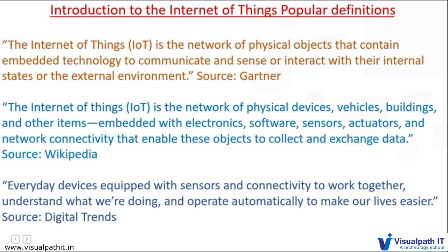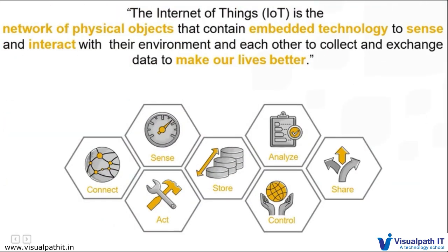Digital Trends defines IoT in terms of everyday devices equipped with sensors and connectivity to work together, understand what we are doing, and operate automatically to make our lives easier. So in short, we can say IoT is the network of physical objects that contains embedded technology to sense and interact with their environment and each other, to collect and exchange data to make our lives better.